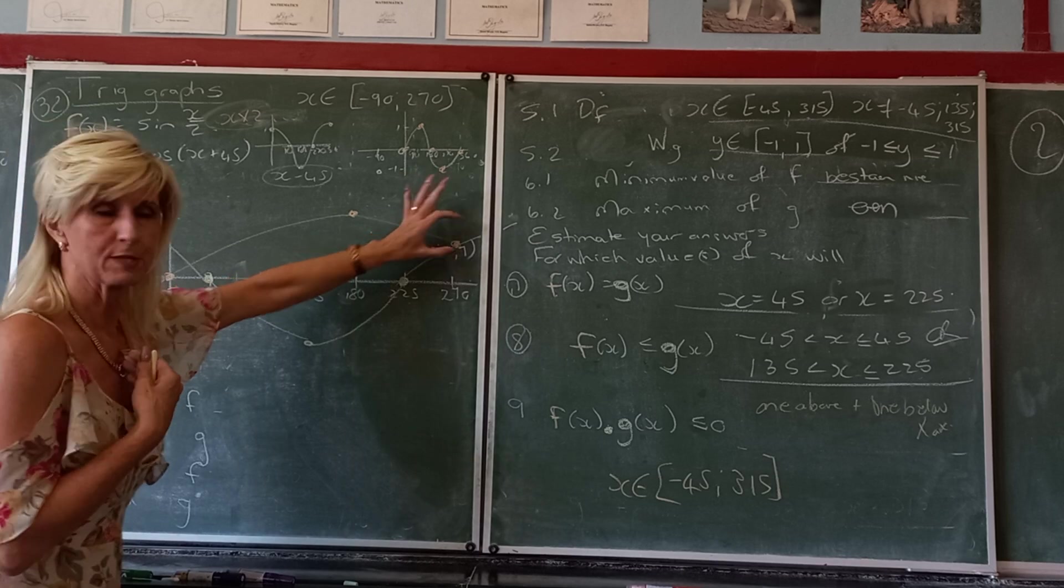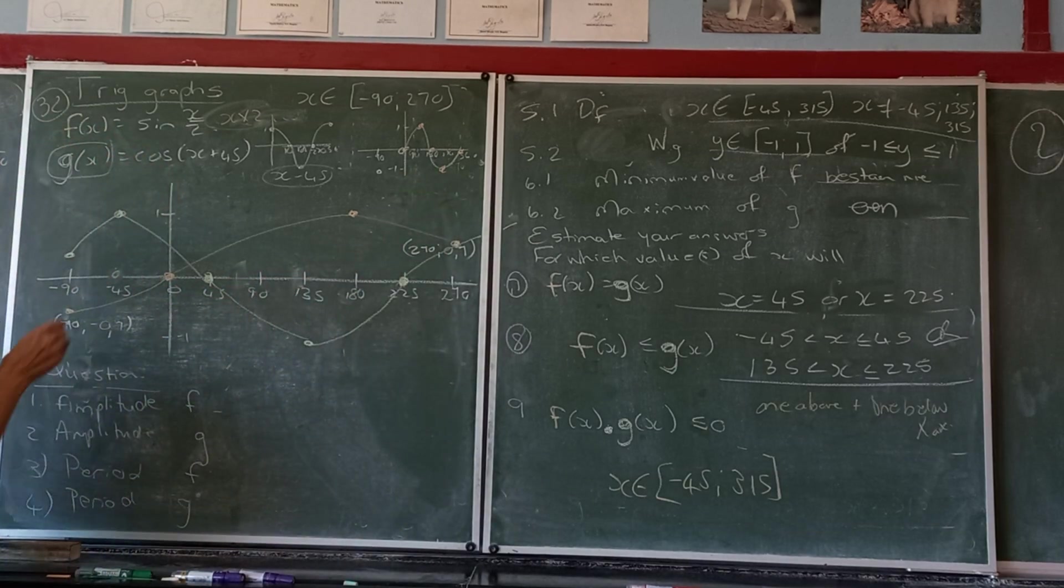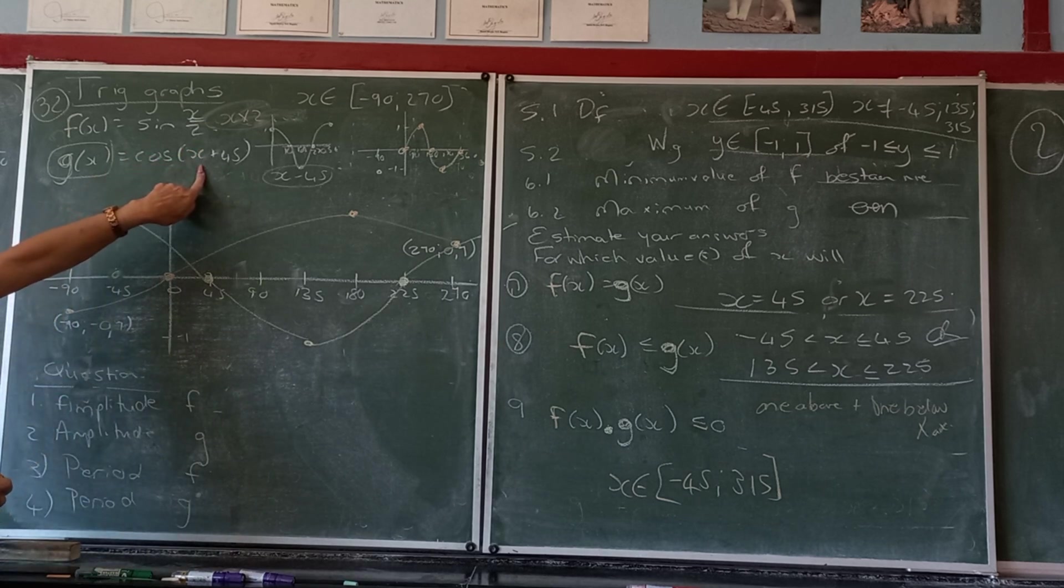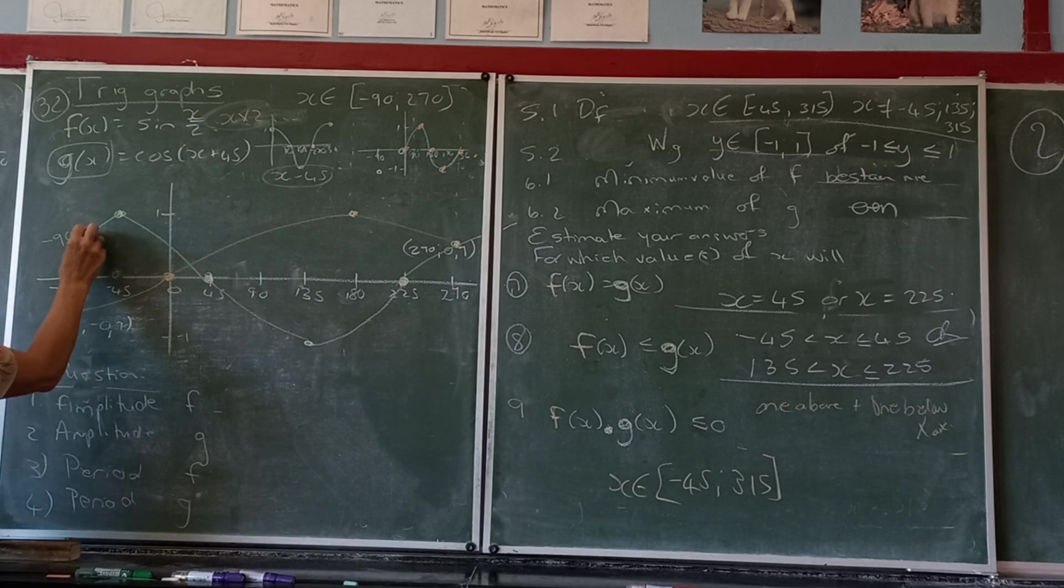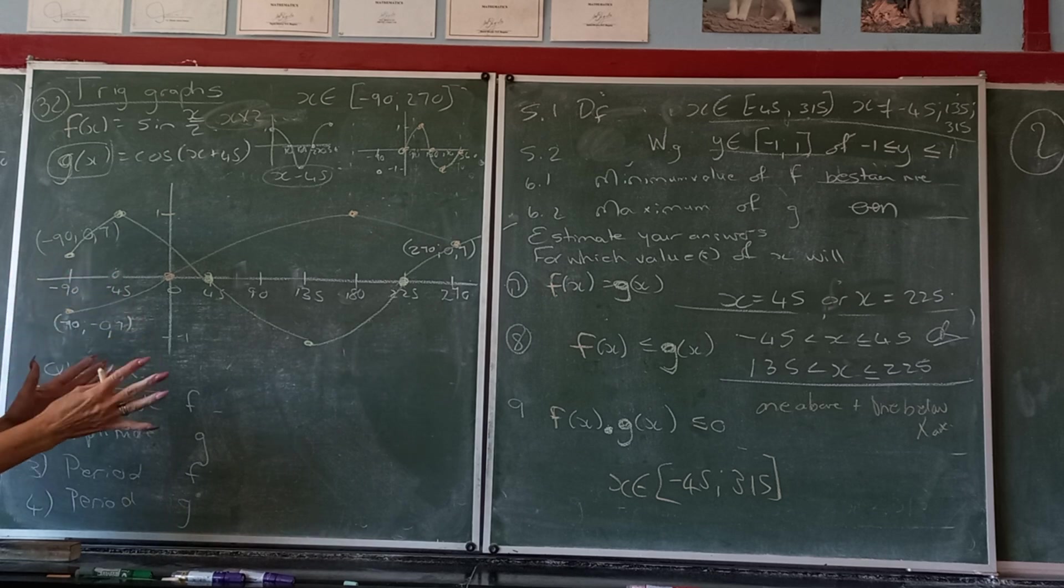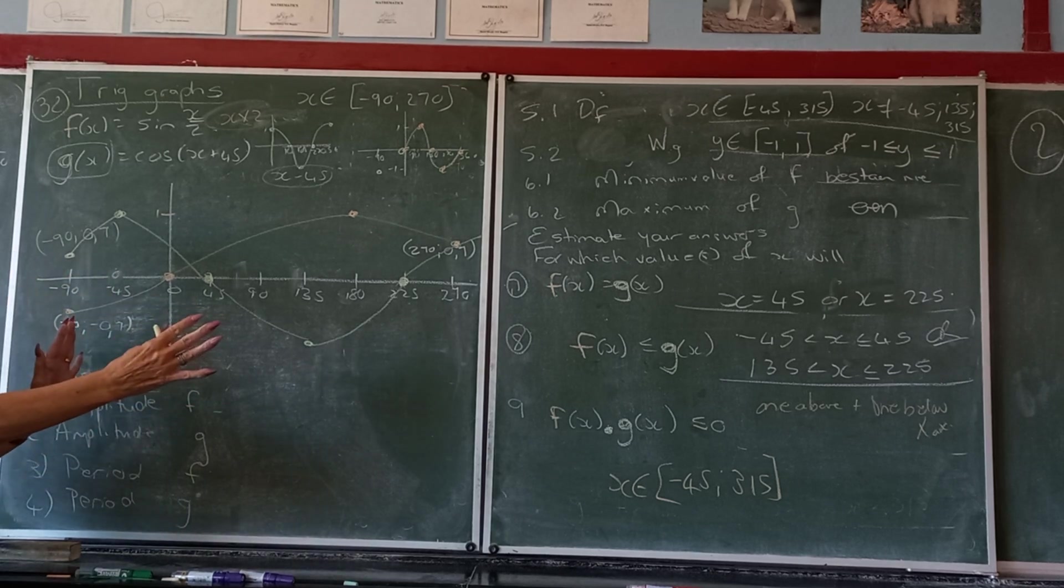And on this side it should be again, if you put in a negative 90 there, zero comma, negative, you've got to have a negative, zero comma 7 again. So there you've got it now. Make sure you've got the correct one.